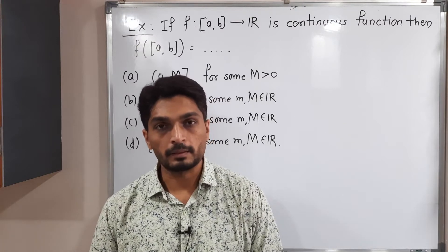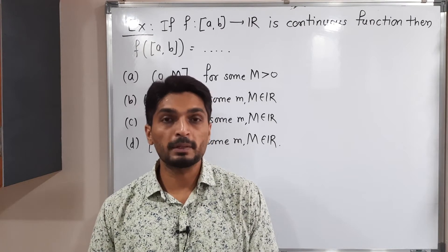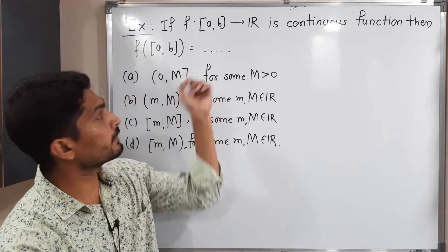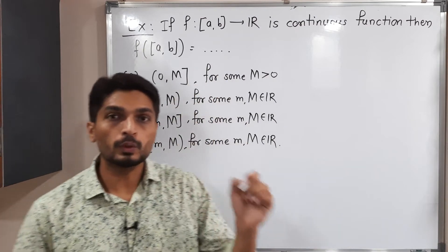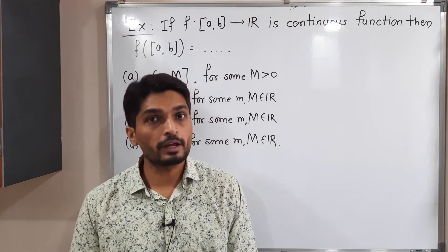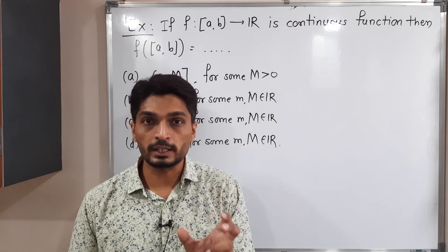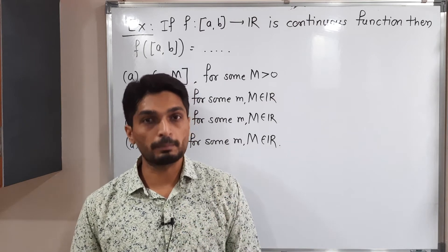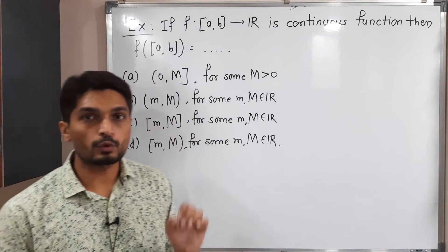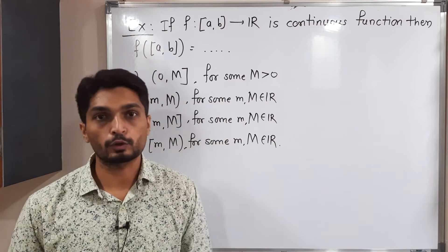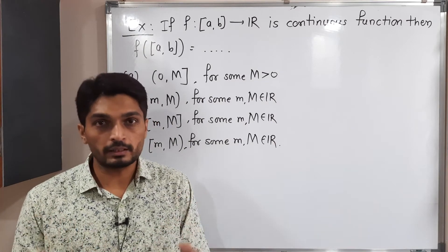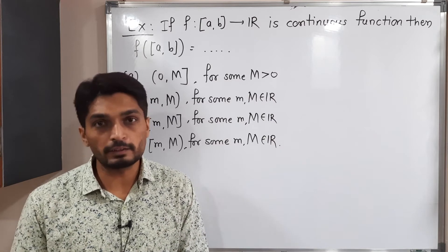Let us discuss this example. In this example, we have a function which is defined on closed interval [a,b] to R. Given this function is continuous, we have to find f of closed interval [a,b]. We have four options to choose from, and we have to select the correct option.